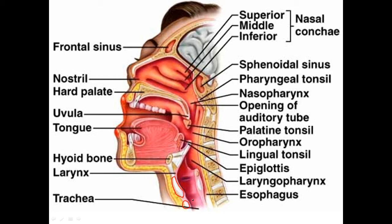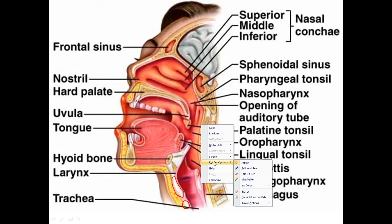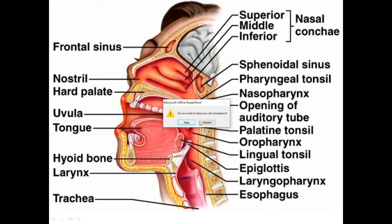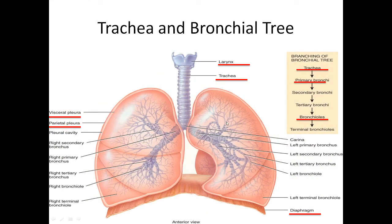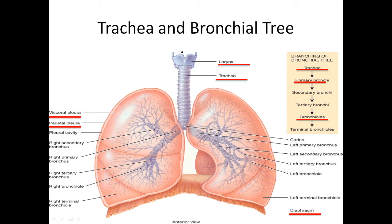Now we're going to move down into the lungs, which makes sense for the respiratory system. The rest of the list is basically the tubes that lead to the lungs, and then the lungs themselves. The thyroid cartilage and cricoid cartilage are right here on this diagram. Now your air tube is the trachea.